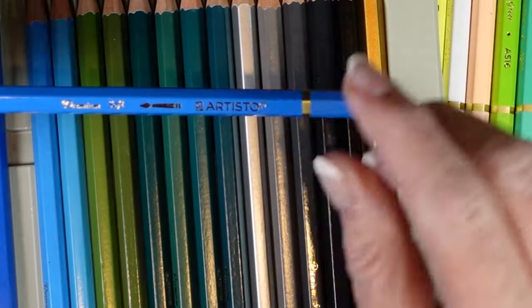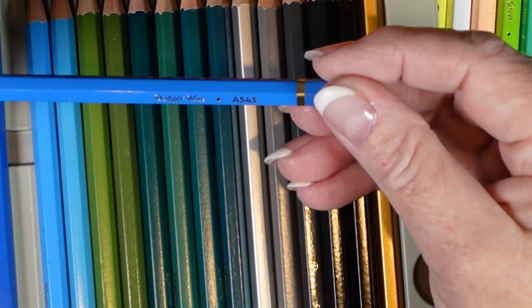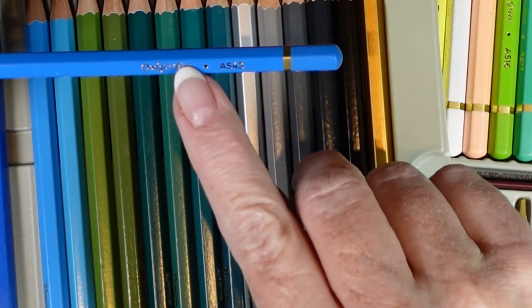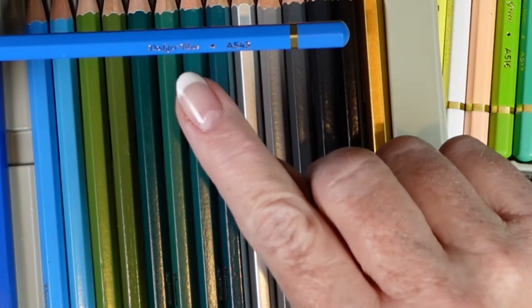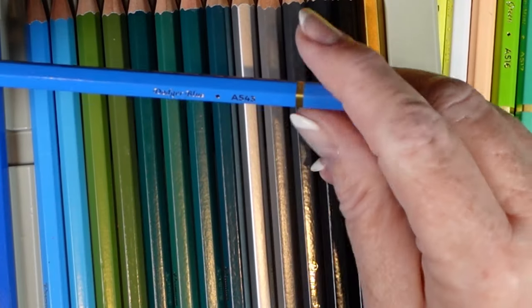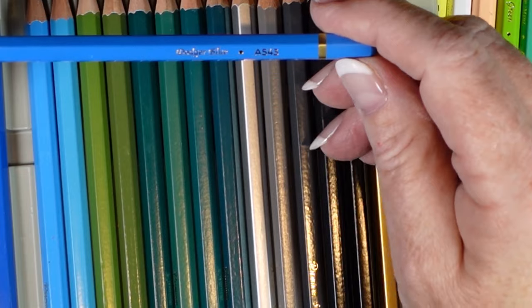It says premium soft. And on the back side, this says Dodger Blue A543. But once again, it's scripty writing. It's gold foil. It's hard to read.